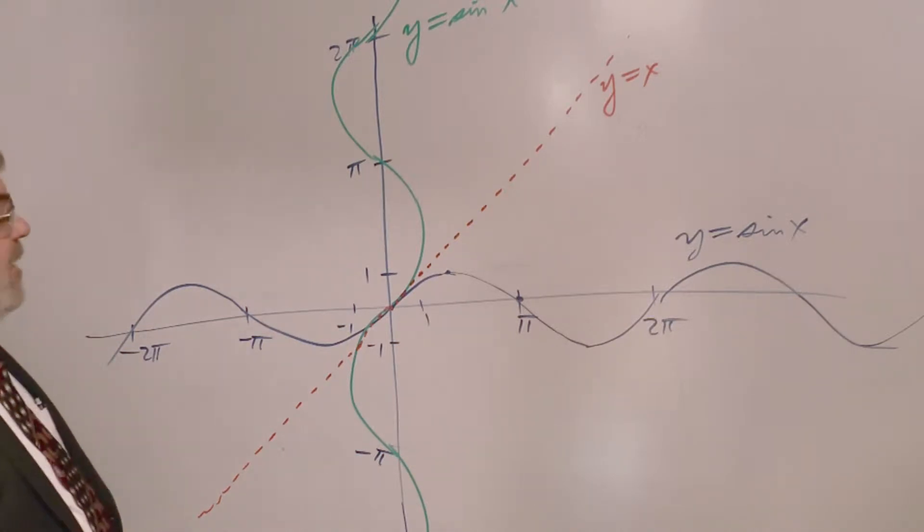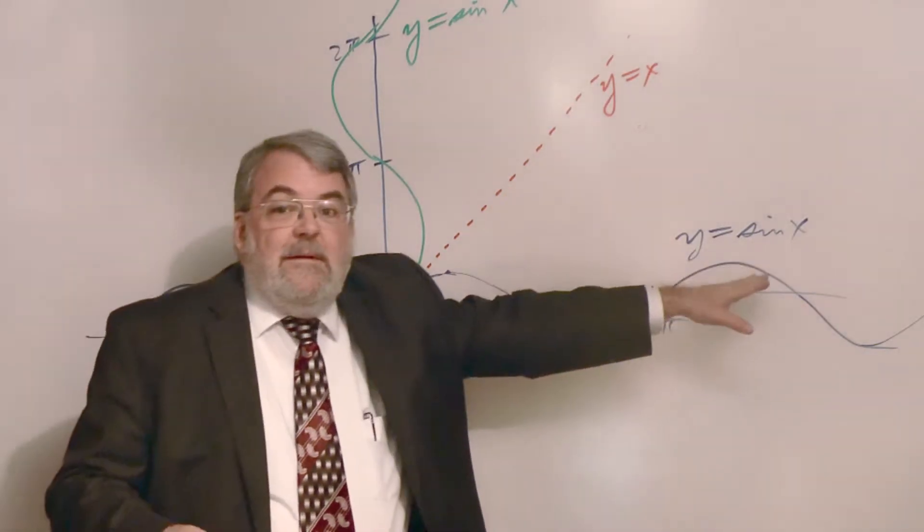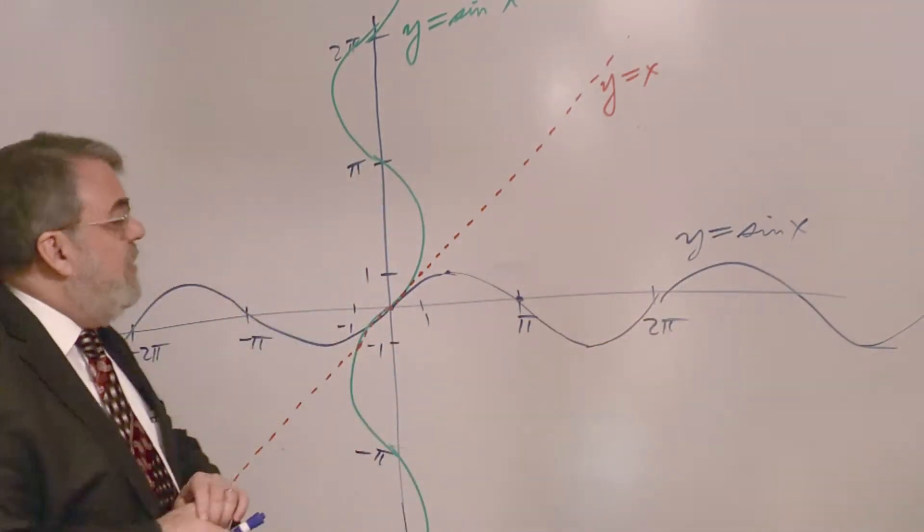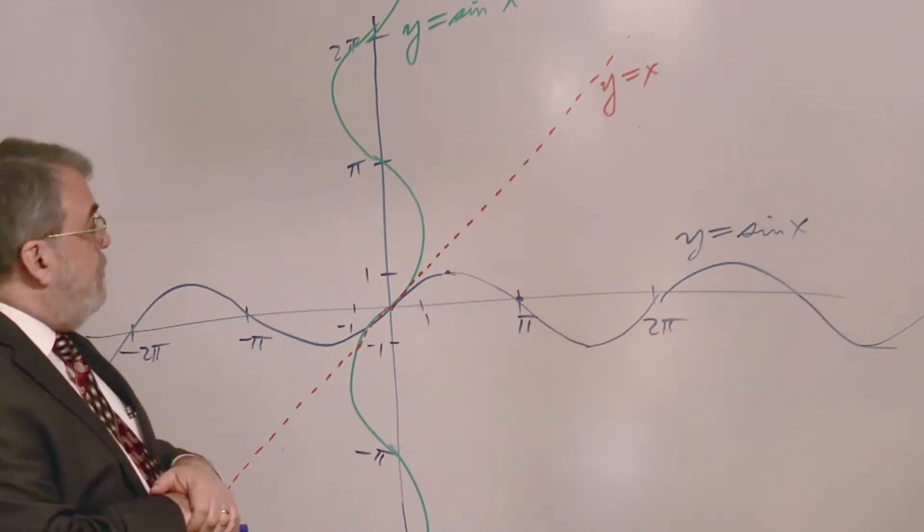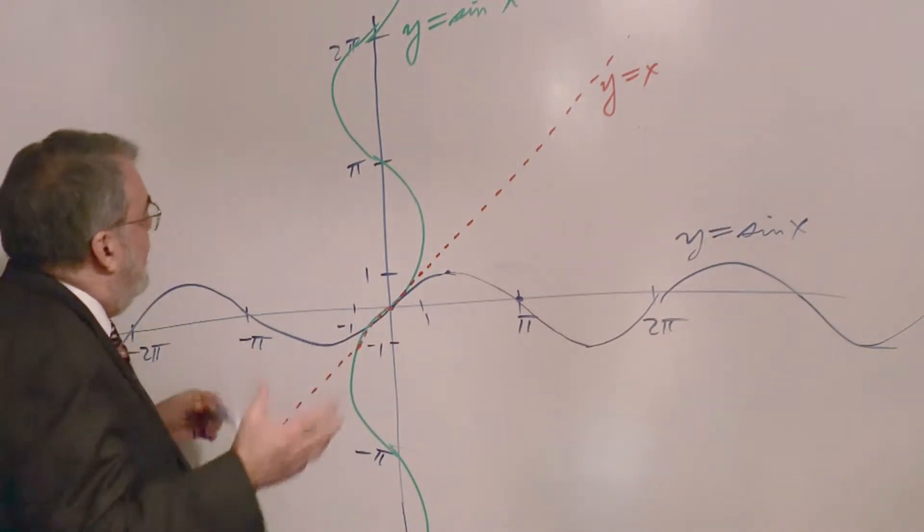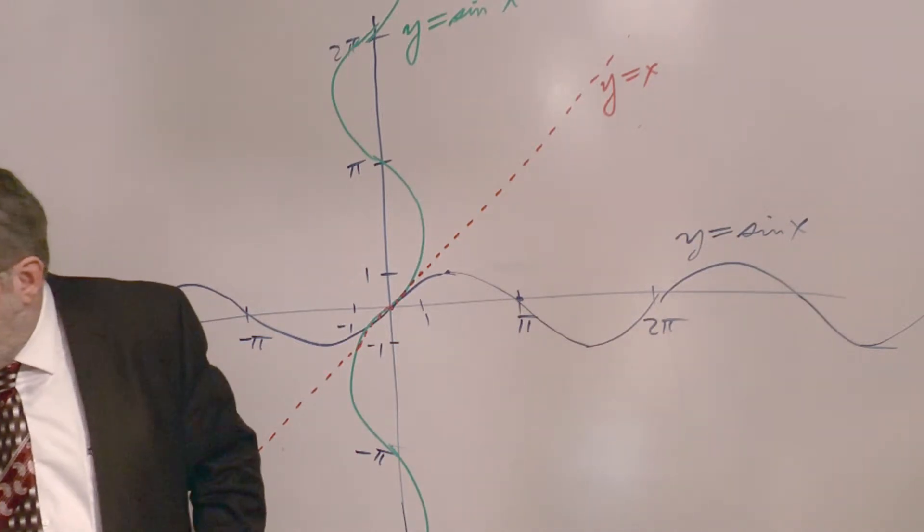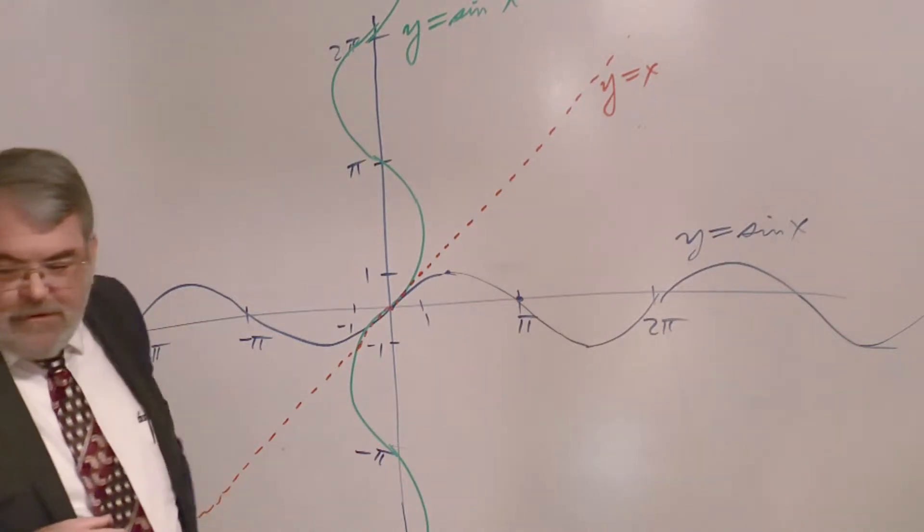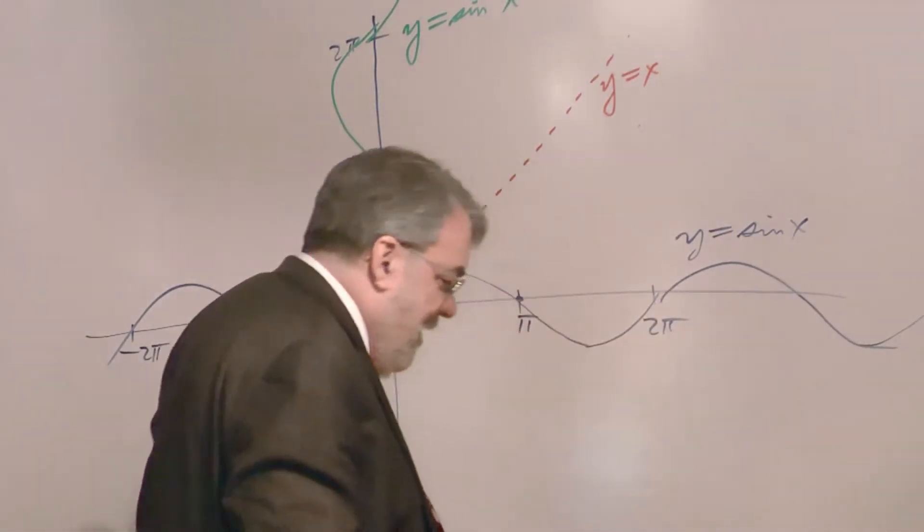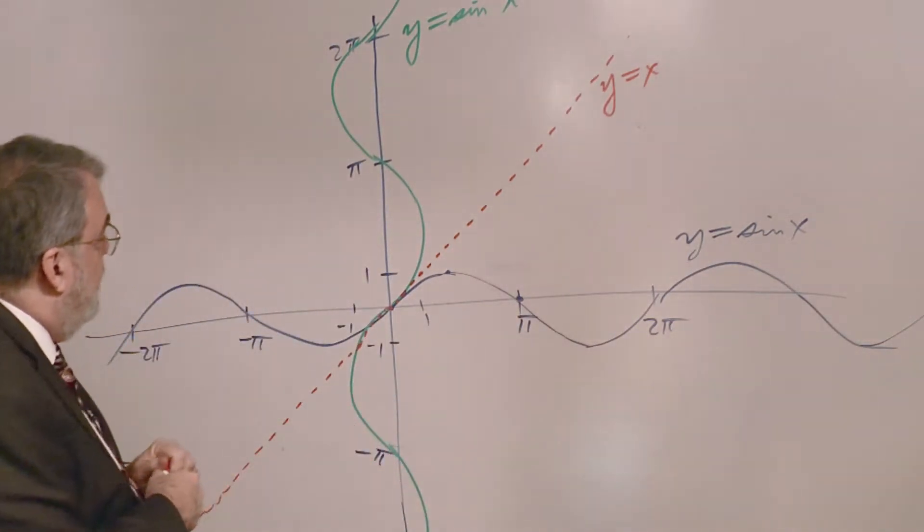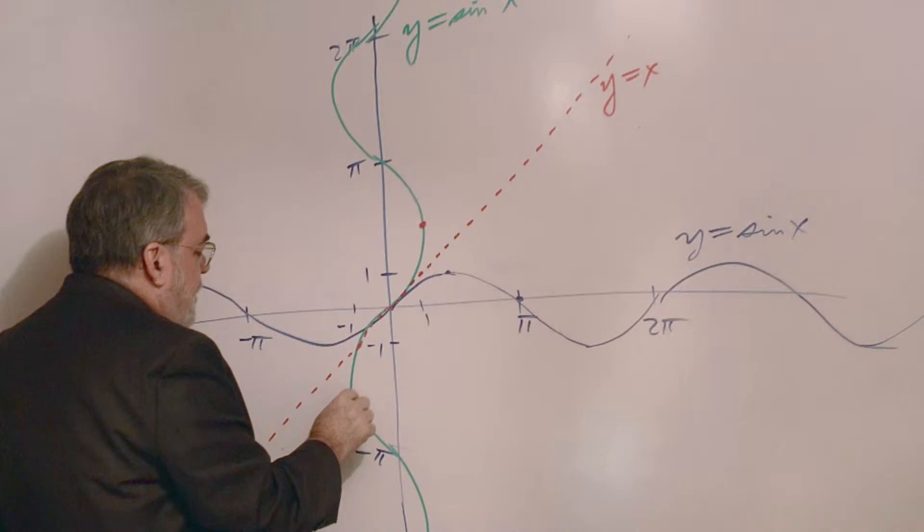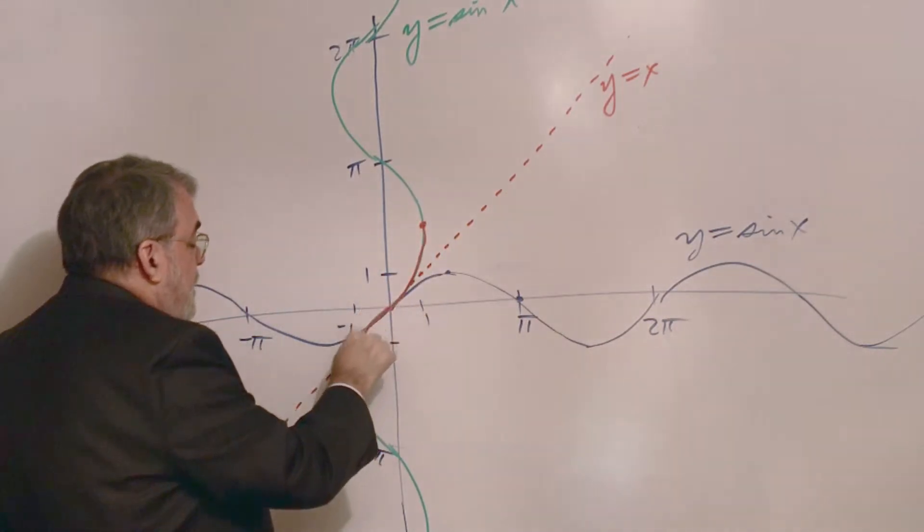So, actually, the sine function does not pass the horizontal line test. Because it doesn't pass the horizontal line test, in other words, the horizontal line will intersect it more than once. A lot more than once. Infinitely many times, actually. Then, it does not have, technically speaking, an inverse function. All right. But, we need an inverse function. How are we going to do that? So, the way around this is to think of restricting the inverse sine to only part of this.